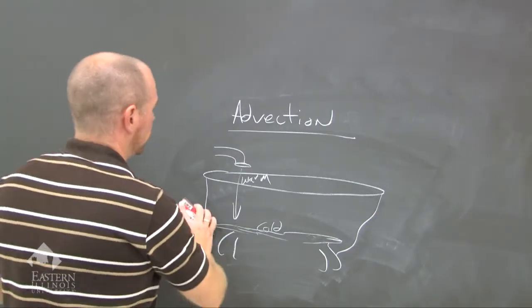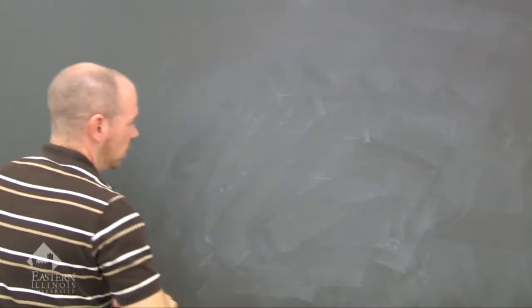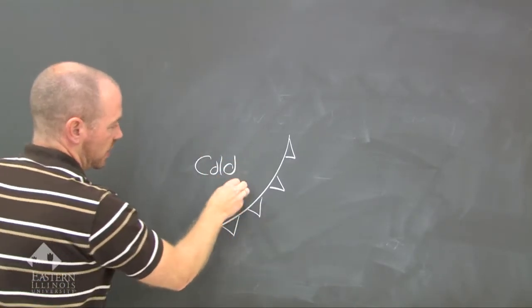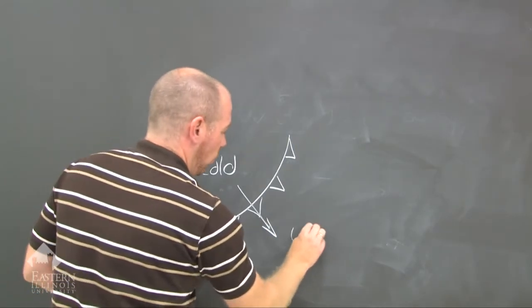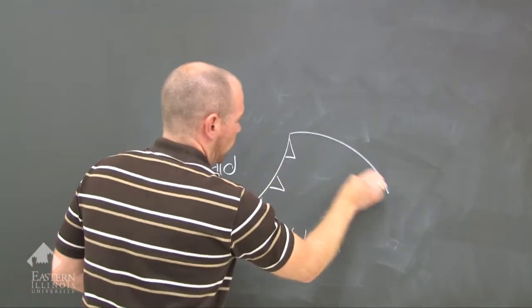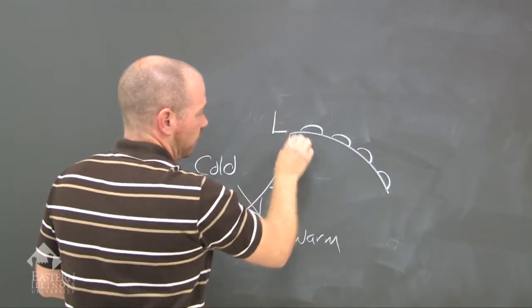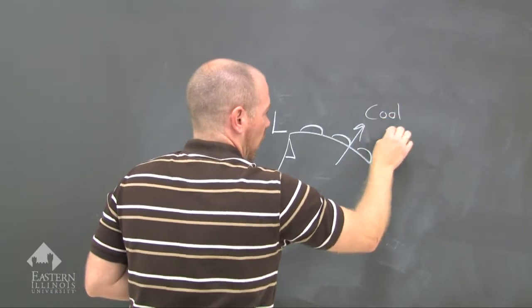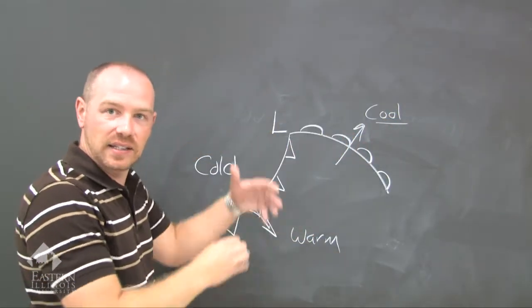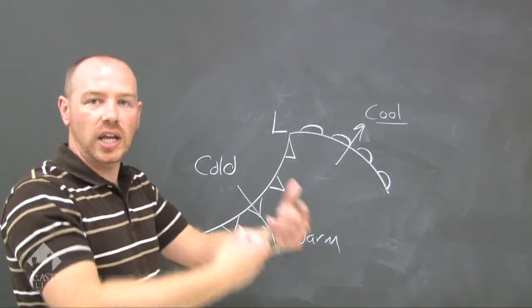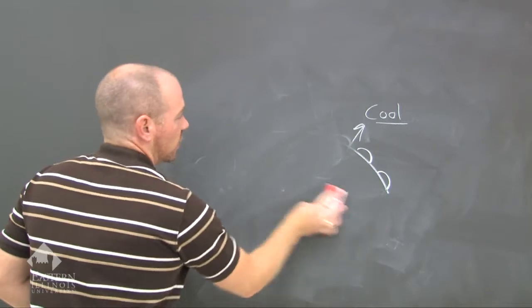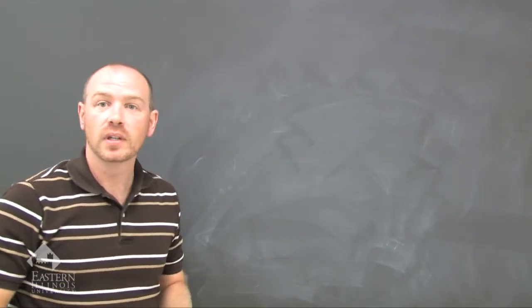When we talk about advection in the atmosphere, we refer to a cold front that moves in with cold air behind it — as it moves, it advects into warm air. The same with a warm front moving into the northeast — the warm air is advecting into cool air. It's not necessarily just moving; it's changing the quality and property of that air. So the three pathways of energy are: conduction (linear), convection (vertical), and advection (horizontal).